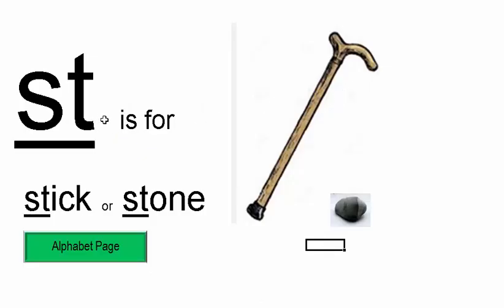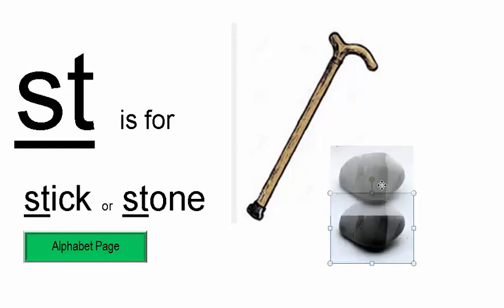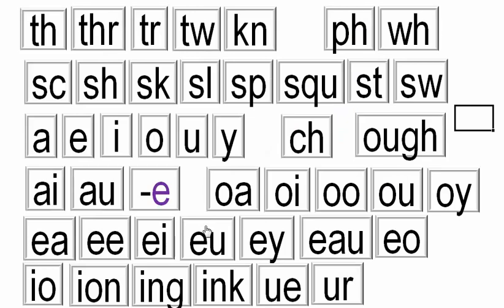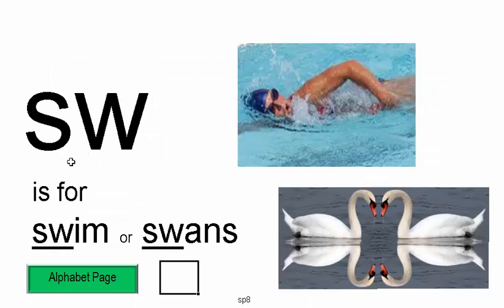ST is for STICK or STONE. Here's a stick, here's a stone, here's a bigger stone. SW is for SWIM or SWANS.